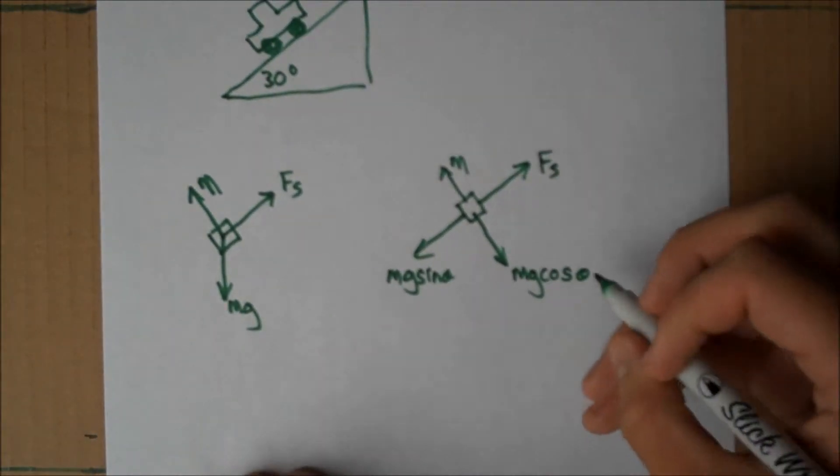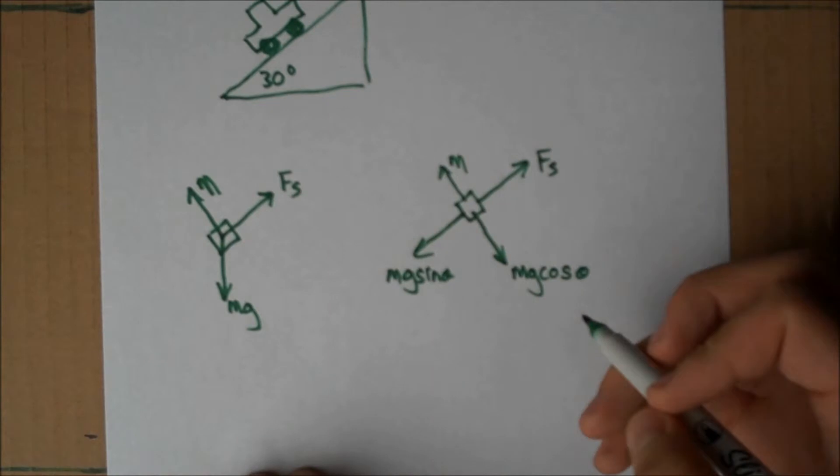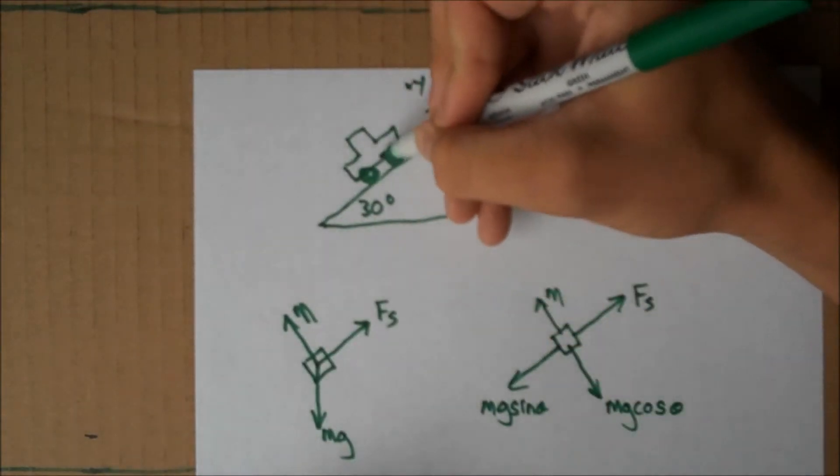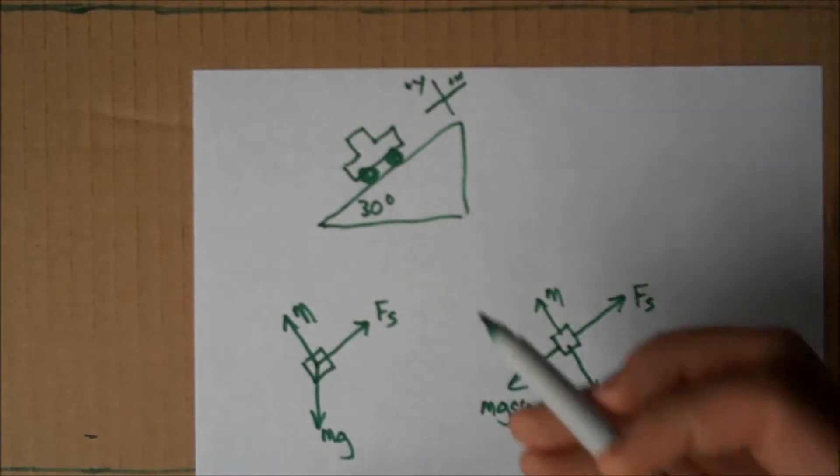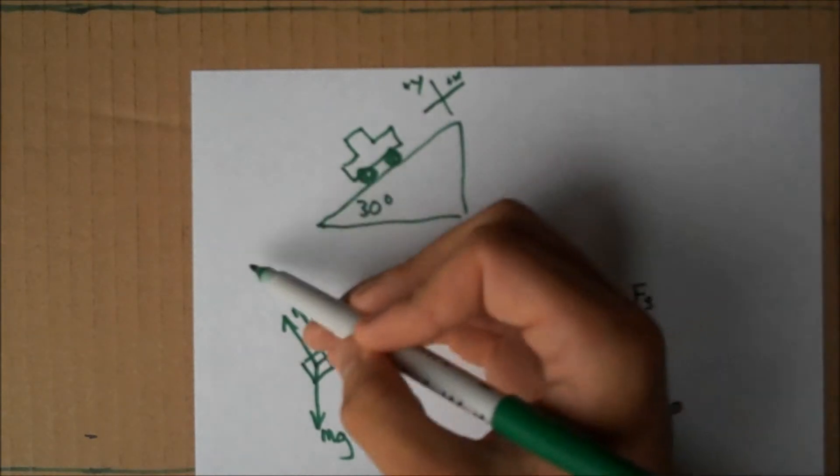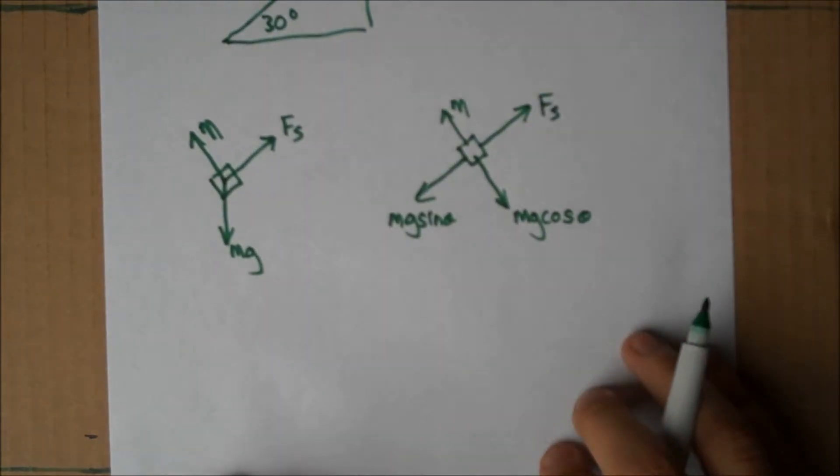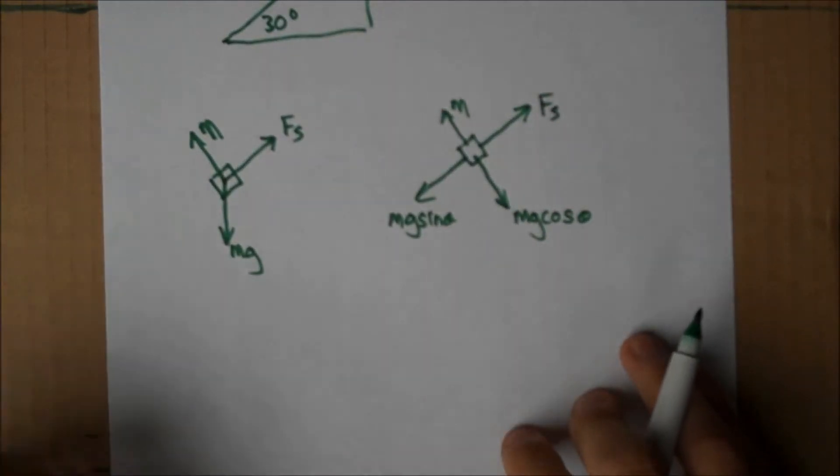An easy way to remember which way is cosine and sine: cosine is in contact, so the car's in contact with the ground, and sine is slide, which is the way it would go down. Now that we've set up the problem, we can move on to part A, which says find the normal force.